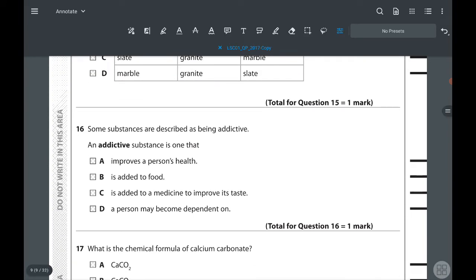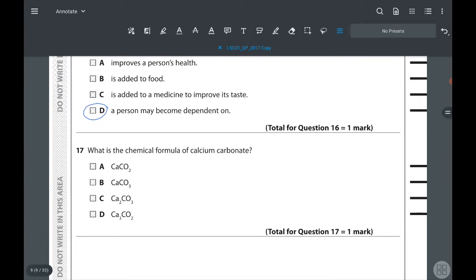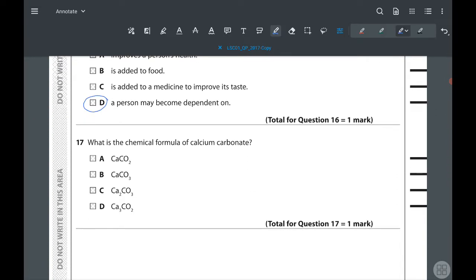16th: some substances are described as being addictive. This is also not directly in the syllabus. The answer is a person may become dependent on it, answer D. Next question: what is the chemical formula for calcium carbonate? It is CaCO3, answer B.